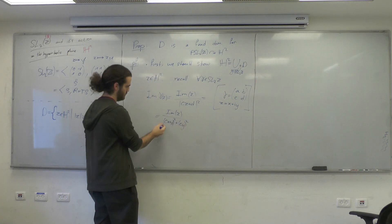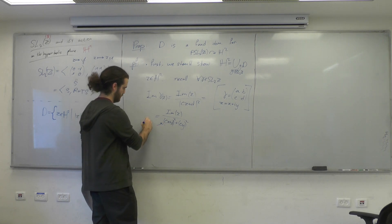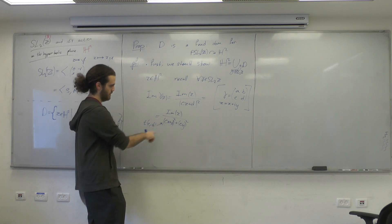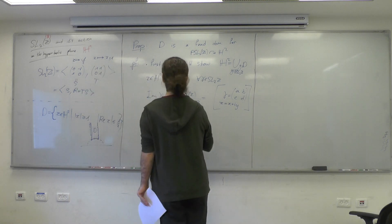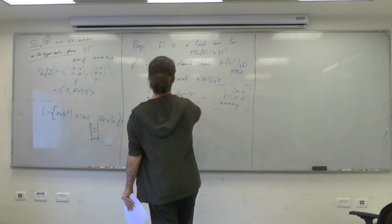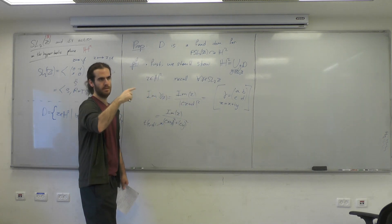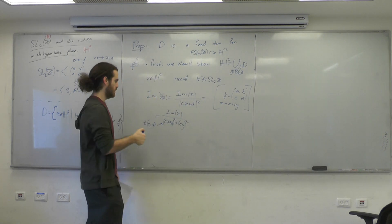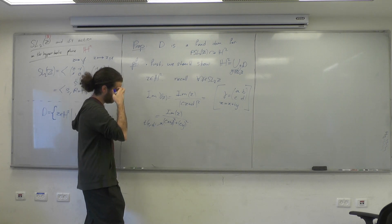We want to show there exists a gamma such that gamma(Z) is inside D, i.e., Z is inside gamma-inverse of D. So let's pick gamma zero in the group generated by S and T.